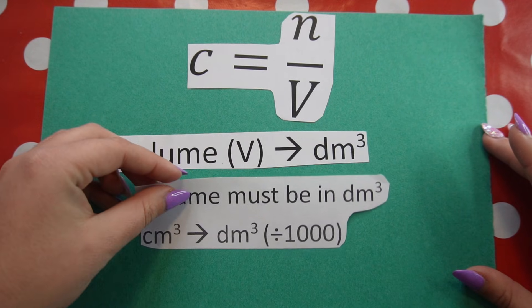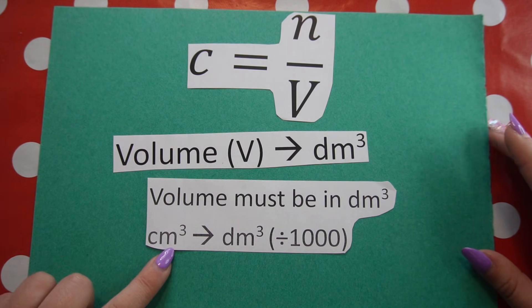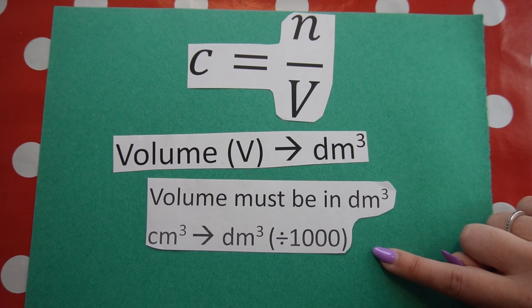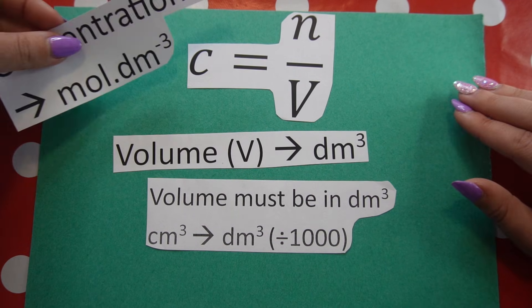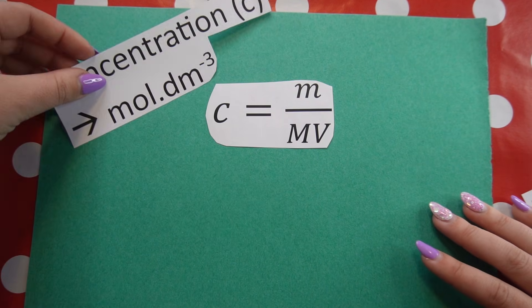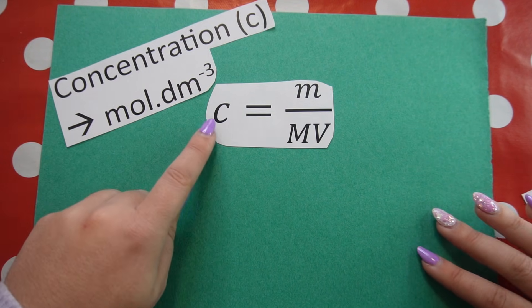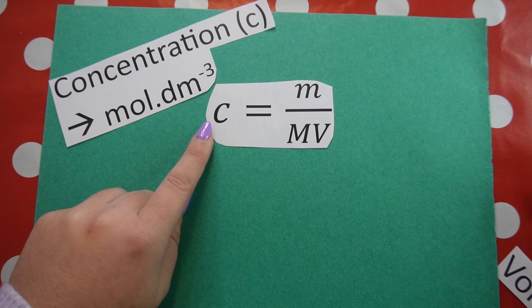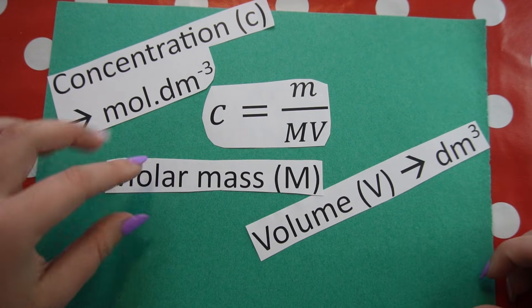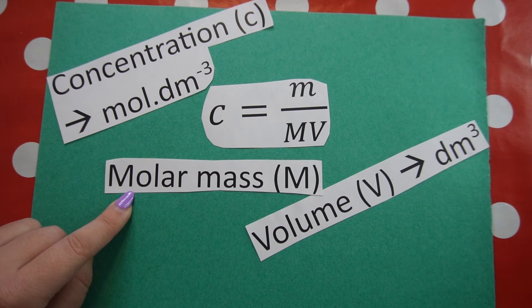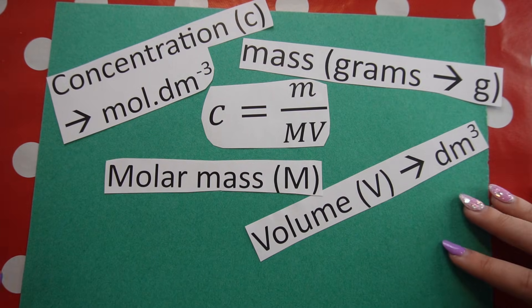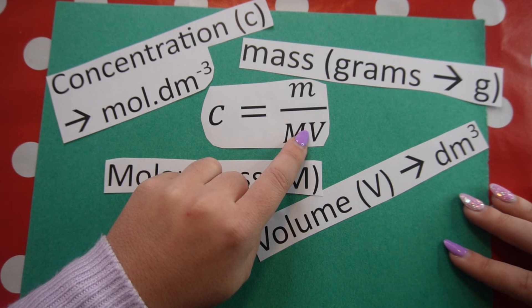Volume is often given in cubic centimeters. In order to convert from cubic centimeters to cubic decimeters, we must divide by 1000. The reason volume must be in cubic decimeters is because the SI unit for concentration is moles per cubic decimeter. Looking at the combined version of the formula, concentration C is in moles per cubic decimeter, and volume V at the bottom is also in cubic decimeters. Big M is molar mass, which we calculate using the periodic table, and little m is mass in grams. Remember that MV means molar mass multiplied by volume.